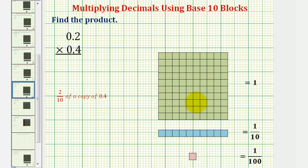The flat, or 10 by 10 block, equals one whole. The long, or 1 by 10 block, equals 1 tenth. And the bit, or 1 by 1 block, equals 1 hundredth.